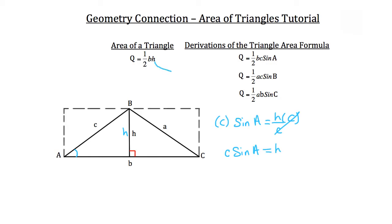So you'll notice that we've taken the height from the triangle area formula and replaced it with the value C times sine of A. That's what you see right here. Now, these other two derivations are used if you were to draw a height from a different vertex.